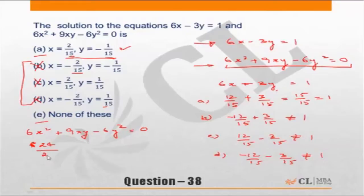So this becomes 24 by 225 plus 9xy. So this is 9 into 2 by 15 into minus 1 by 15, and minus 6y square is minus 6 into 1 by 225. So this is 24 upon 225, this is 9 into 18 minus 18 by 225, this is minus 6 by 225 which is equal to 0.